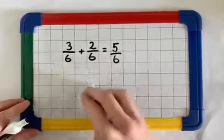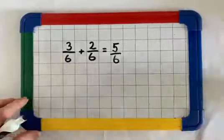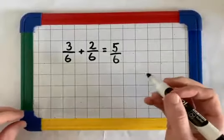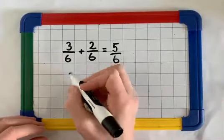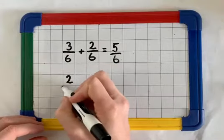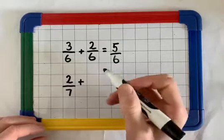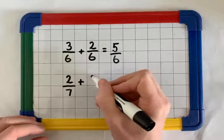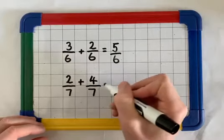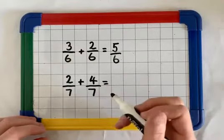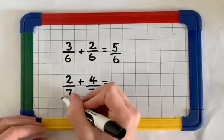We can see that again. If this time we look at adding 2 sevenths, add 4 sevenths. Again, I could draw this out using my bar,